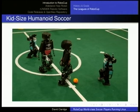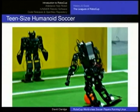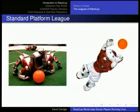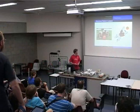Moving on to the humanoid soccer leagues, there are three: kid size, teen size, and the standard platform league. In kid size and teen size, universities or companies build their own robots within height and weight restrictions. The standard platform league is designed for people more interested in software — AI and that side of robotics — rather than building robots themselves. It started with the Sony AIBO, which has been deprecated, and since 2008 has used the Aldebaran NAO humanoid robot.